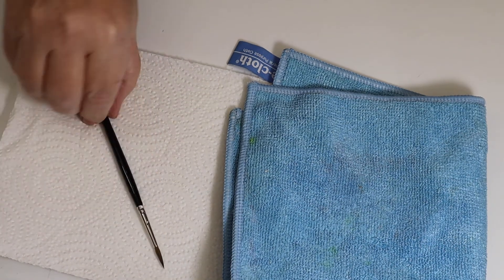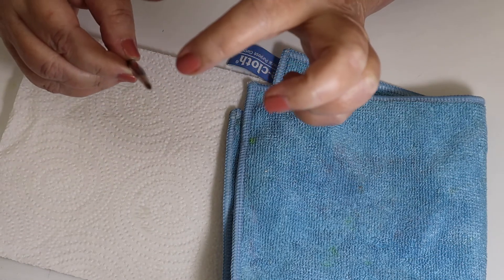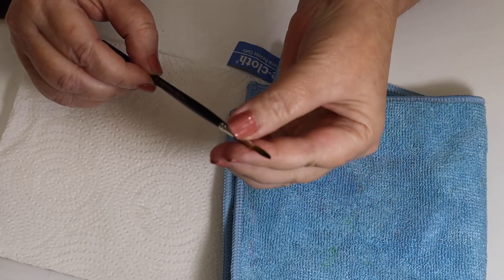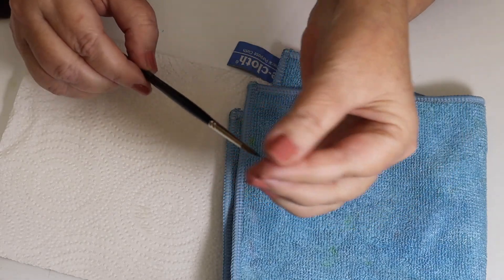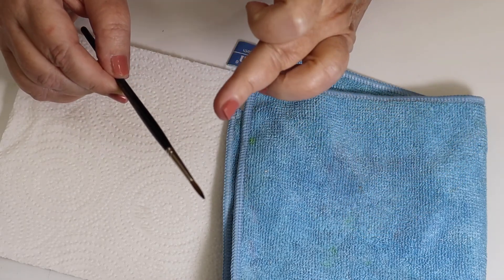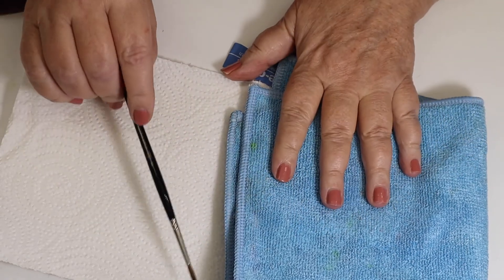otherwise that water will drip down into the ferrule here, this metal part, and then your hairs and bristles in your brush will get loose and fall out, and your brush just won't be as good.